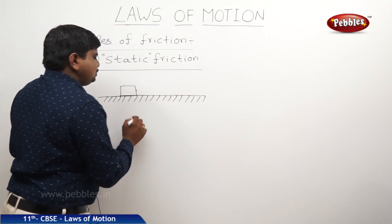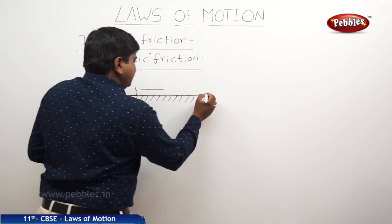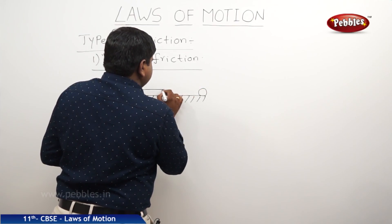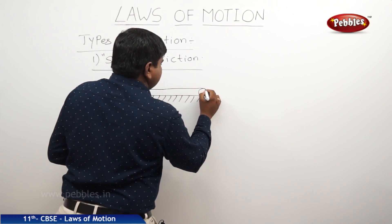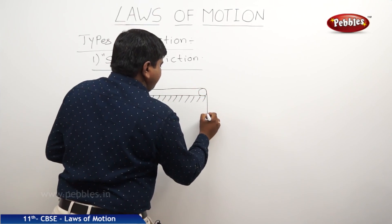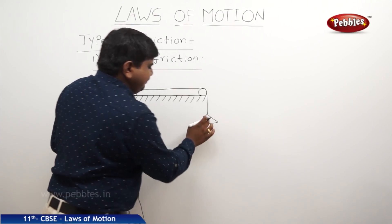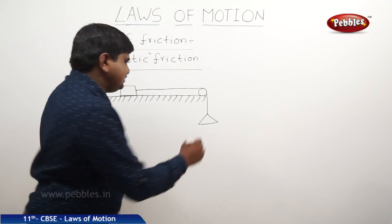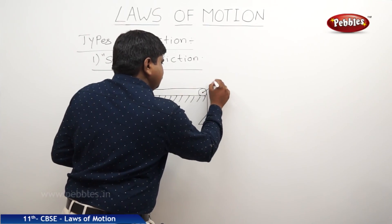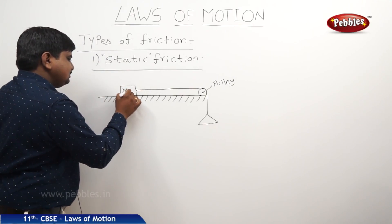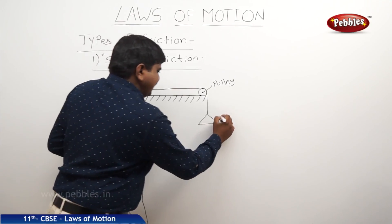It was fixed to a thread and this thread is mounted on a pulley. One pan is attached at one end. In this pan we should add the weights. This is pulley. This is the object with mass m. This is the pan.